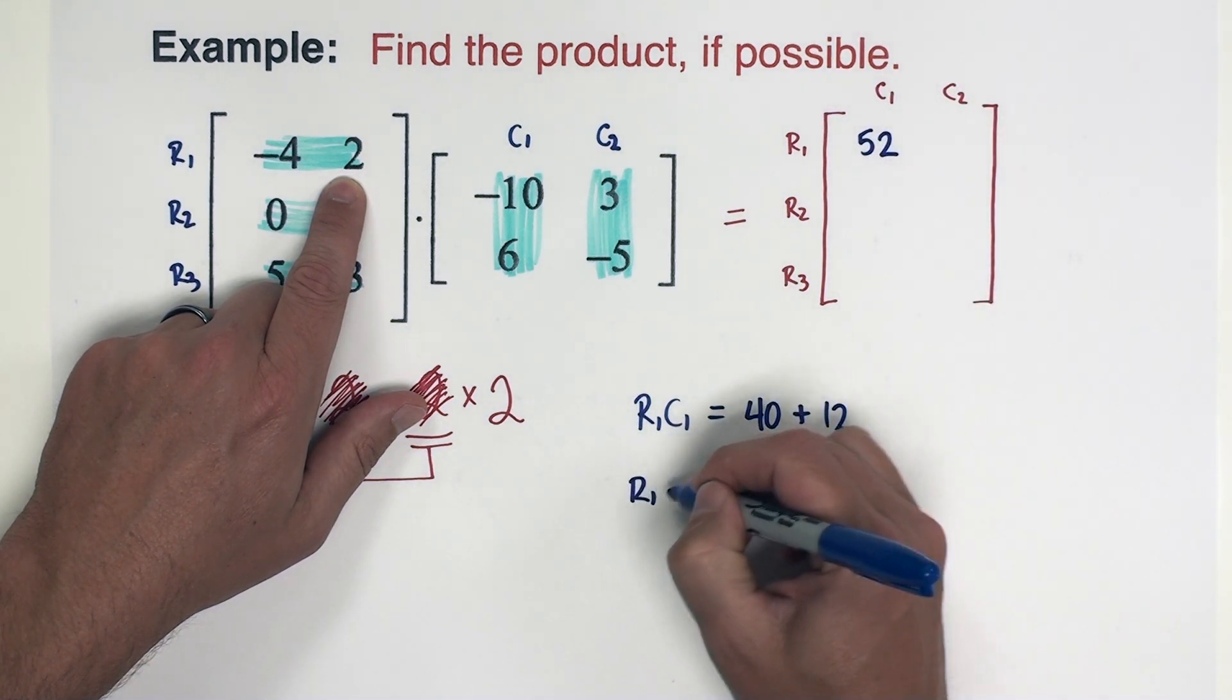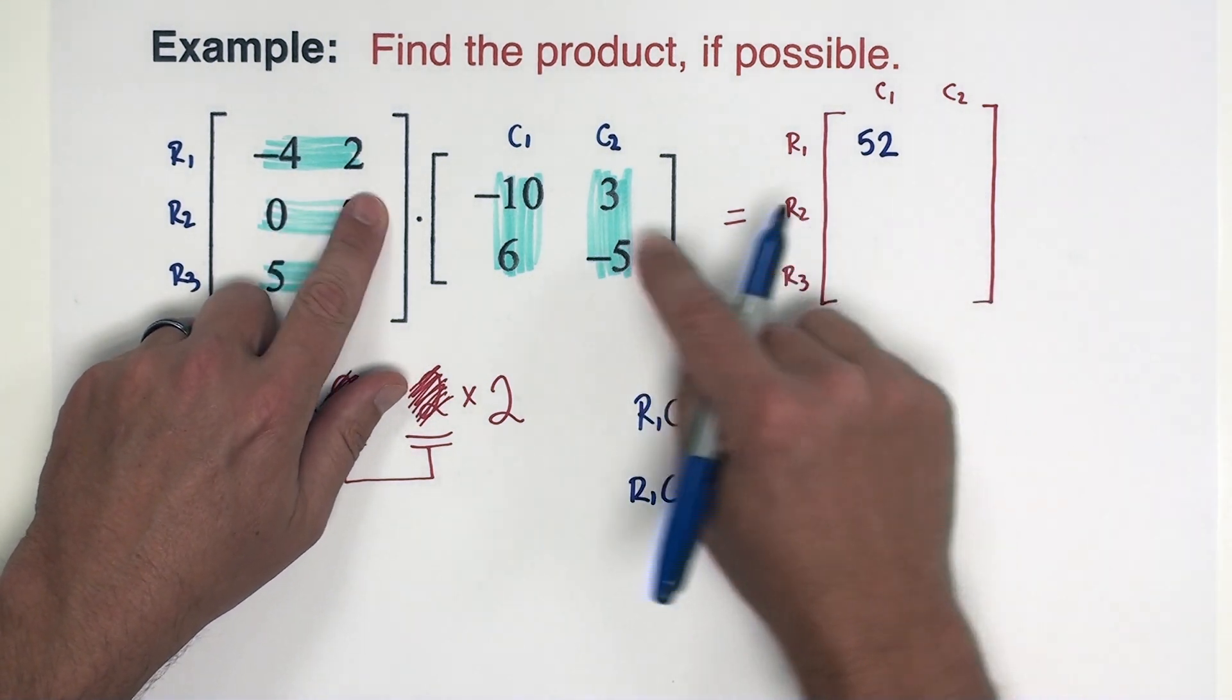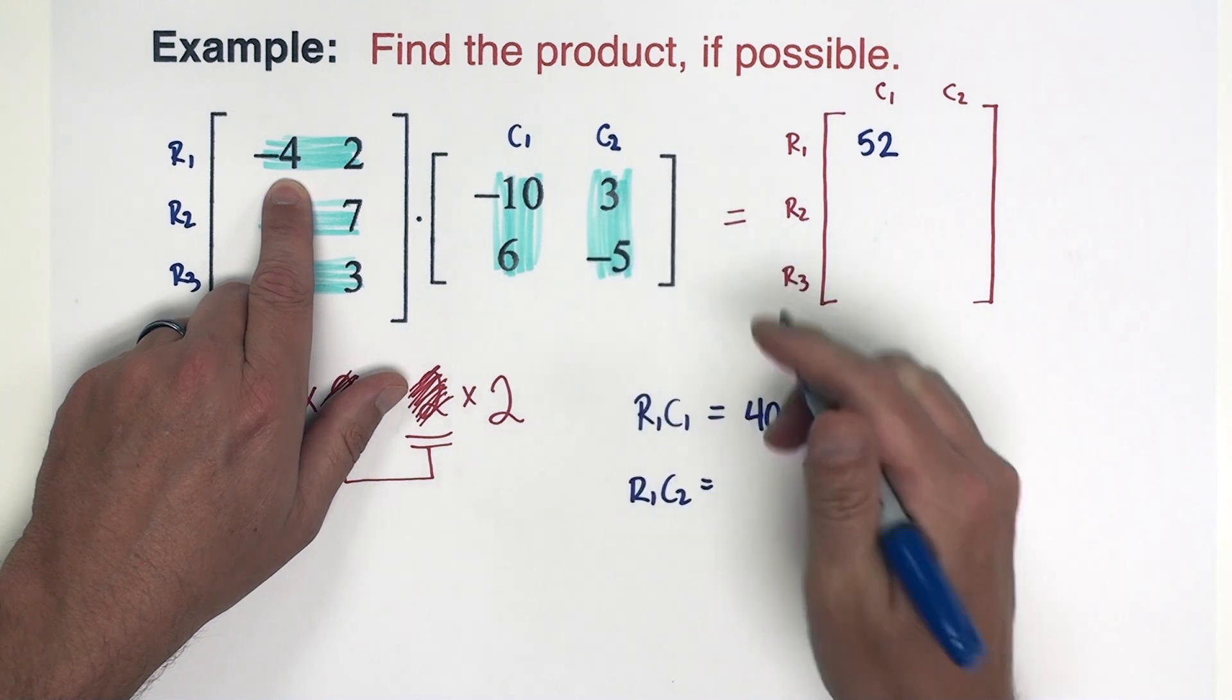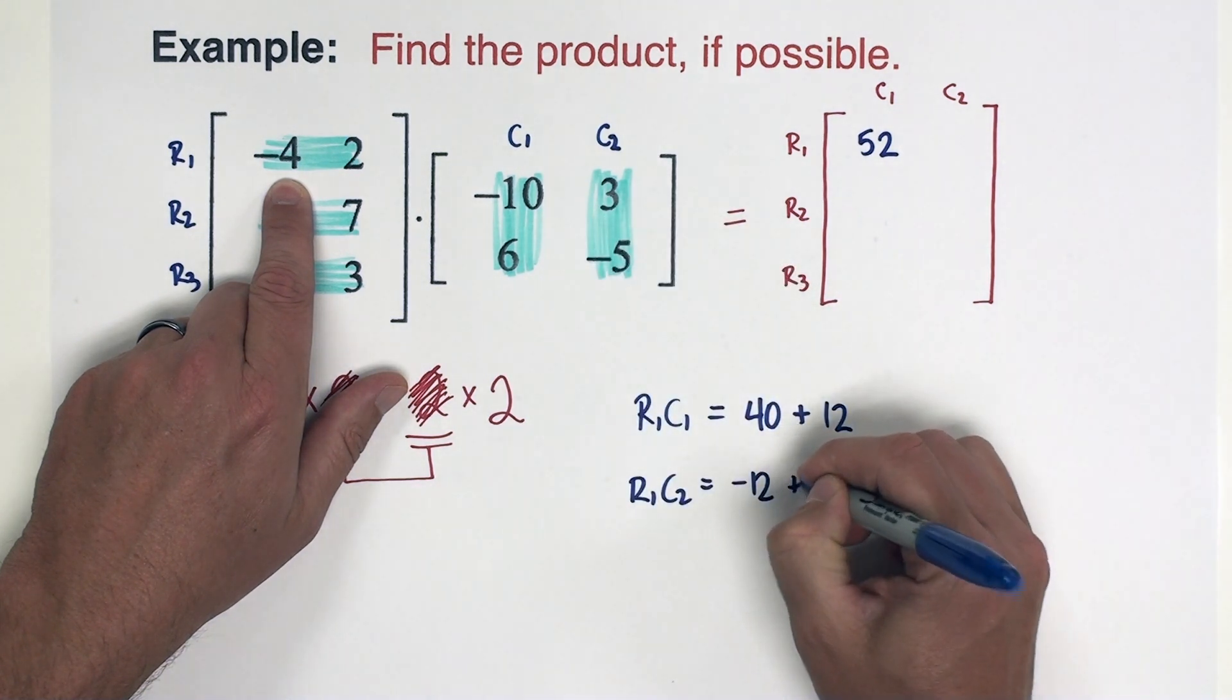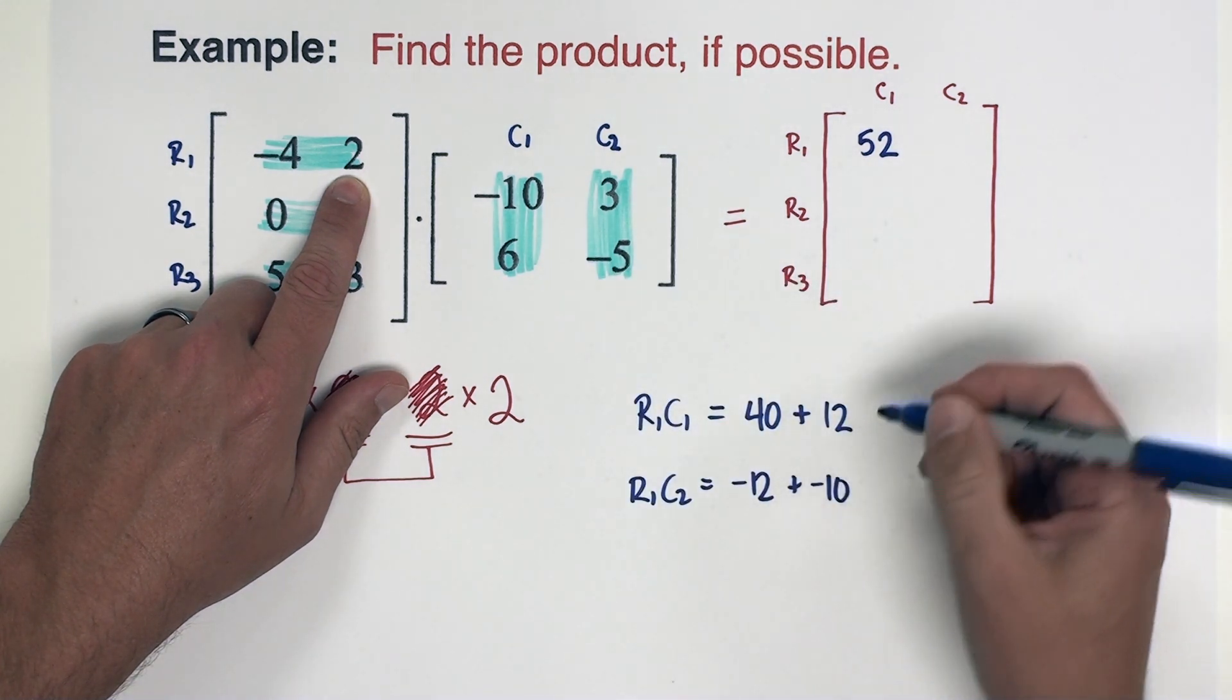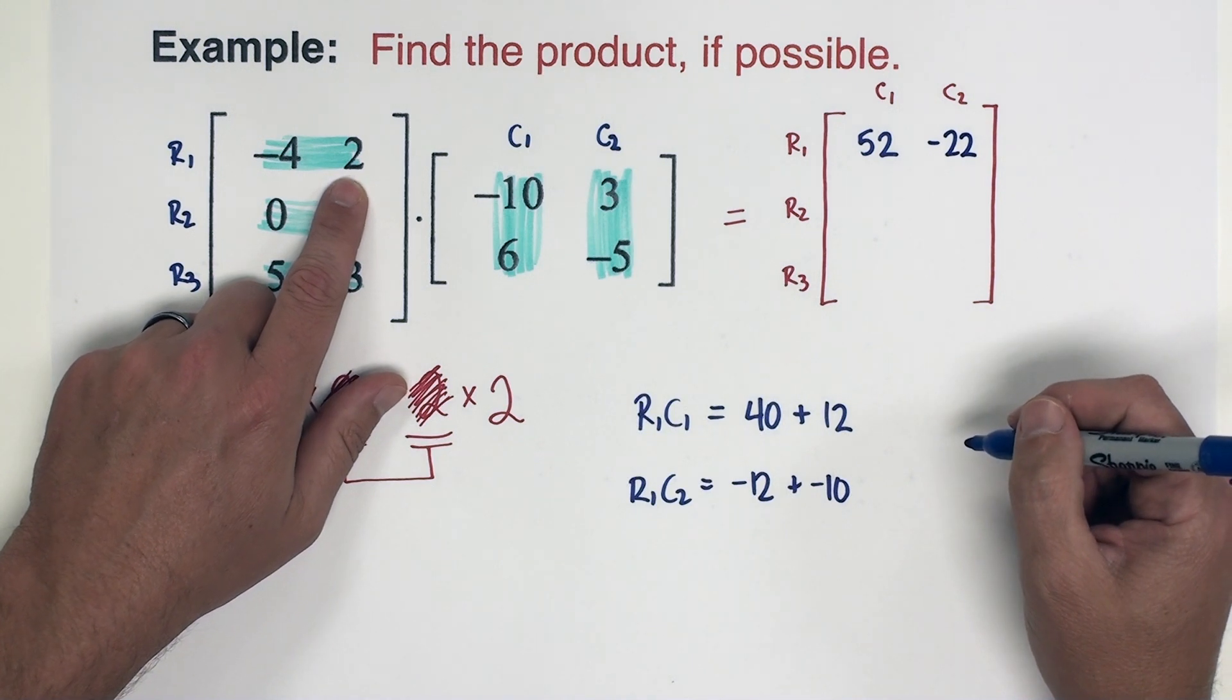Now let's do the first row, second column. So I'm going to stay right here with these numbers, but now I'm going to shift over to these numbers. So negative four and three is negative 12, and then two and negative five is negative 10. Those are going to add to negative 22.